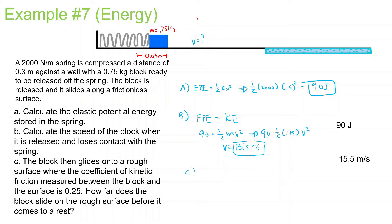Part C: the block glides onto a rough surface where the coefficient of kinetic friction is 0.25. How far does the block slide before it comes to a stop? We know mu_k equals 0.25. Let's draw a free-body diagram: there's a force of gravity, a normal force, and a force of friction. The force of gravity is 0.75 times 10, so 7.5 newtons. The normal force is the same. The force of friction is 7.5 times 0.25, giving 18.75 newtons.